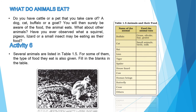हमने देखा कि कुछ food items animals से मिलती हैं, पर animals क्या खाते हैं? अगर आपके पास cattle या कोई pet है जैसे dog, cat, buffalo, या goat, तो आपको पता होगा। But what about other animals like squirrel, pigeon, lizard, और insects — वो क्या खाते होंगे? Activity 6 में एक table है जहाँ animals के नाम दिए हैं और उनके सामने लिखना है कि वो क्या खाते हैं। यह list comment box में post करना।